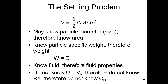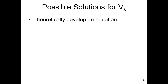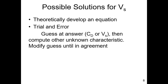In the settling problem, you typically do not know the settling velocity. If you don't know the settling velocity, you can't calculate the Reynolds number, and without the Reynolds number you can't find the drag coefficient. Two possible solution paths exist: develop a theoretical equation, or use a trial-and-error approach. I'll explain both through examples today. In the trial-and-error approach, you don't know the settling velocity or the drag coefficient, so you guess one to find the other, then modify your guess until your answer converges.